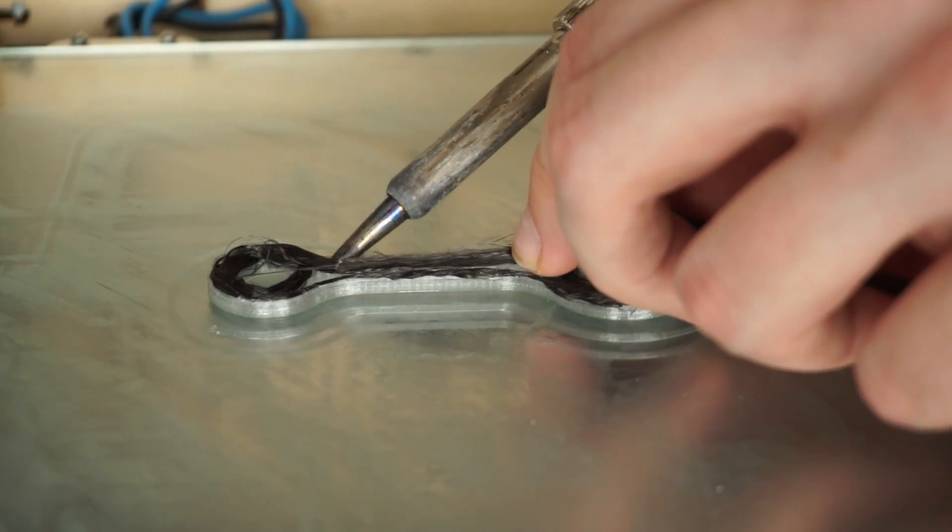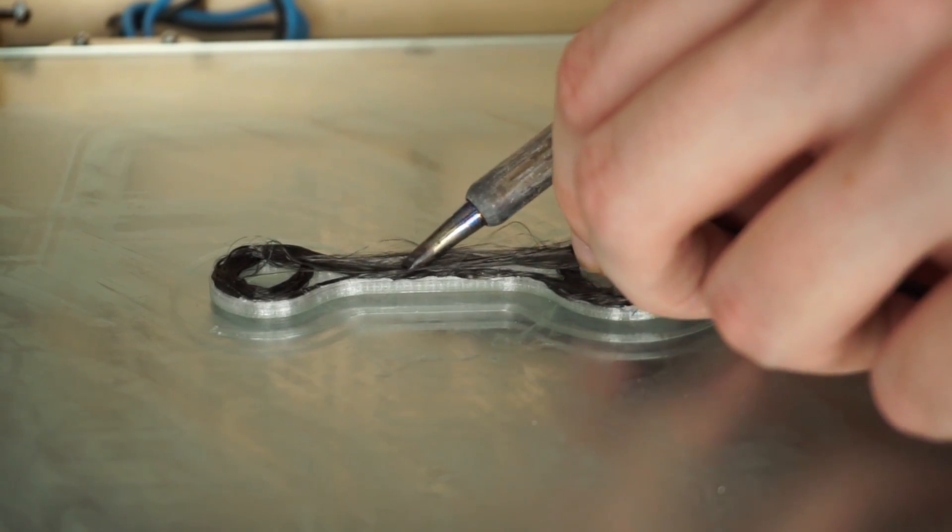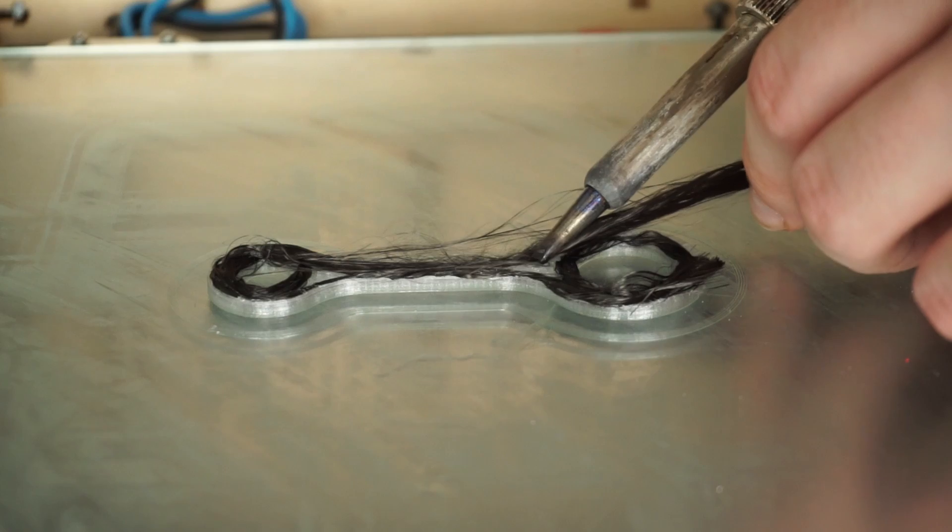My first idea was to use the fibers the same way as the steel wire in the last part, just use a soldering iron to press it into the plastic. I quickly realized that this isn't going to work well.